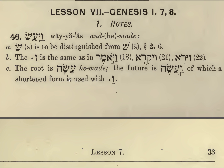The root is 'he made' — Ngasa. The future is Yangas. And this is a shortened form of Yangas with Vav and the Dagesh — Vayangas.